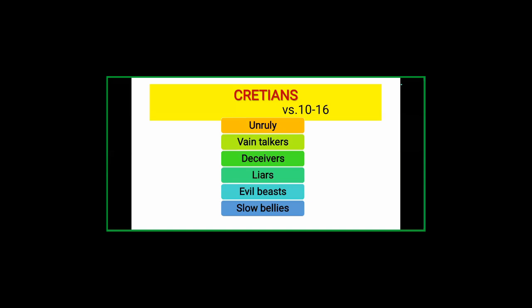In chapter one verses ten and eleven we find how unruly the Cretians were — vain talkers, deceivers, liars, evil beasts, and slow bellies. Paul understood they were not able to accept the truth; they could not accept that God had sent his Son to do away with the law of Moses. Based on what was happening among the Christians in Crete, verse sixteen says: 'They profess that they know God, but in works they deny him, being abominable and disobedient.'